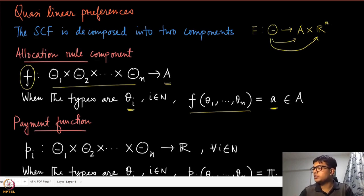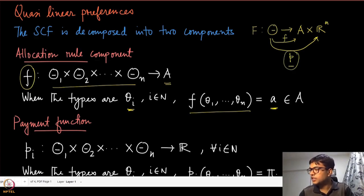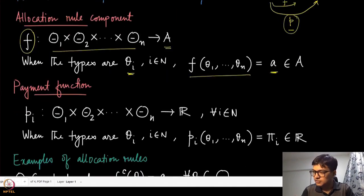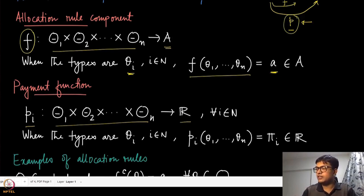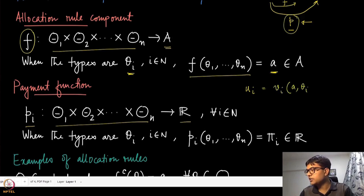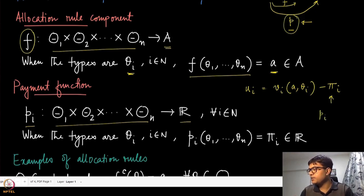The second component is denoted by P, which is essentially a collection of functions — a vector of functions — because we will have to define the payment for each player. For player i, if they report their types, it picks one real number. This real number can be either positive or negative. In our utility definition, V_i(a, theta_i) minus pi_i, this pi_i is the real number value, which we can replace with P_i(theta_1, ..., theta_n).